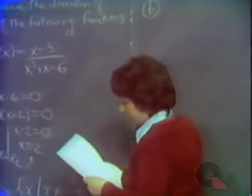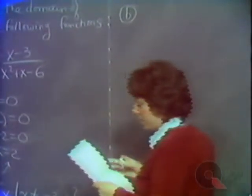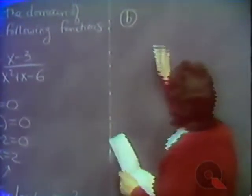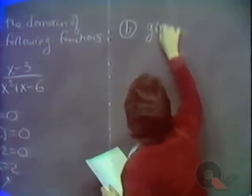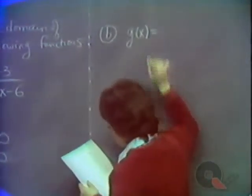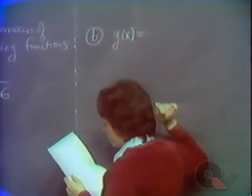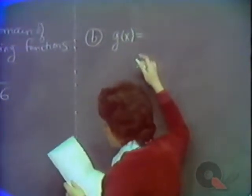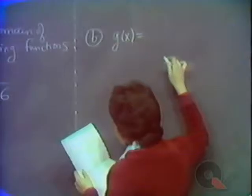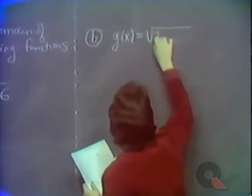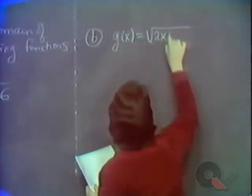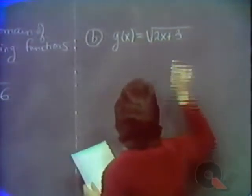In our next example, part b, we have the function g of x is equal to the square root of 2x plus 3.